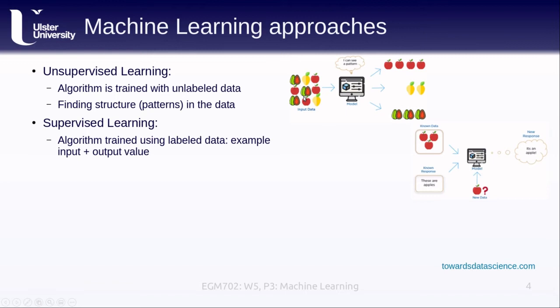Supervised learning, on the other hand, is where we train the algorithm or train the computer using already labeled data. We have our example input data and the expected output value.